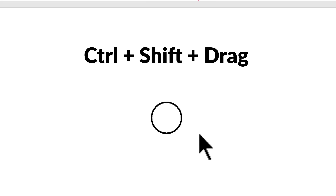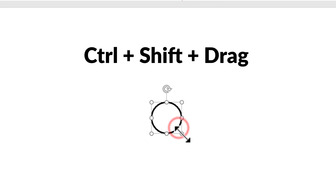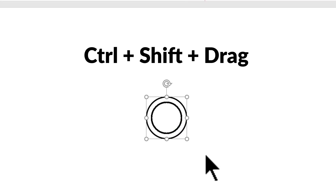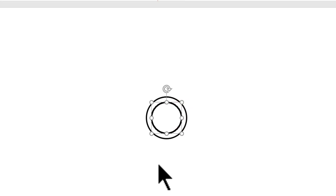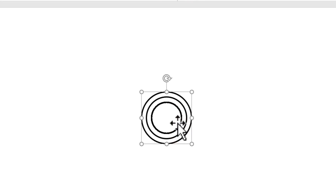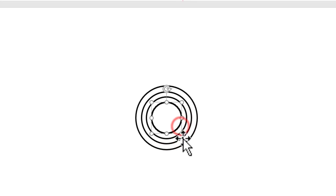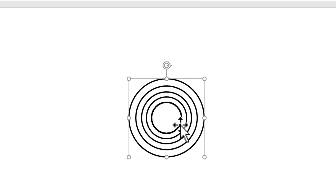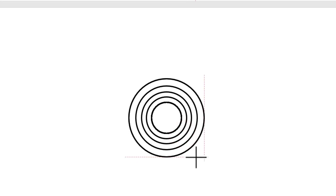Now let us see the power of Ctrl-Shift-Drag. I'm going to hold the Ctrl button down and Shift button down as I select this and drag from the corner to create my first copy. Then I'm going to select this again, Ctrl-Shift-Drag, and create the next one. Can you see how easy it is? You keep doing that till the time all the circles are done and you create a series of concentric circles by pressing Ctrl-Shift-Drag.